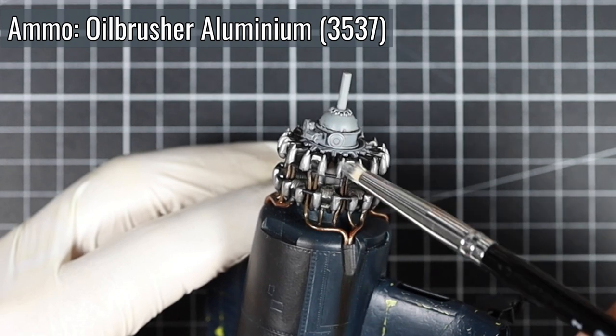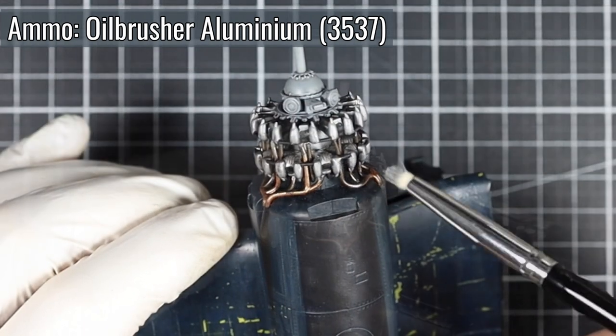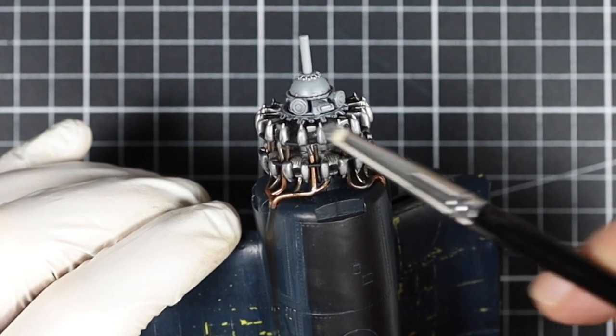I really like to use metal oil paint for dry brushing. This makes it very easy to highlight details.